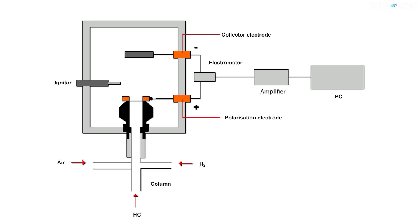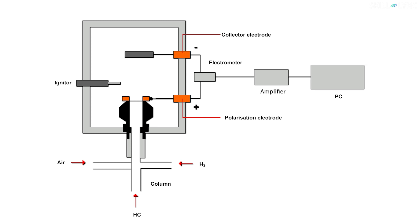The ion-collector assembly consists of two electrodes to create a potential difference. The positive electrode, also called the polarization electrode, is placed nearer to the nozzle of the inlet gases, and the negative electrode, also called the collector electrode, is placed at the top of the flame. These electrodes are connected to an electrometer which in turn is connected with an amplifier. The amplifier sends the signal to the computer display.